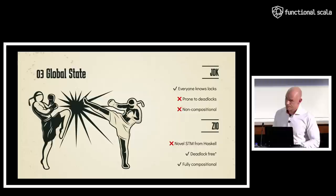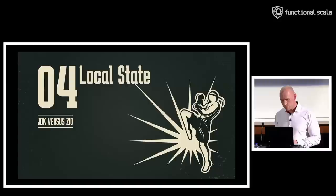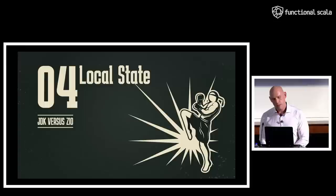JDK: everyone knows locks, but they're prone to deadlocks and not compositional — actually quite hard to use. ZIO uses STM imported from Haskell, which requires learning but gives you truly deadlock-free code and fully compositional transactions. It's very easy to maintain STM code. ZIO wins this round. Local state.